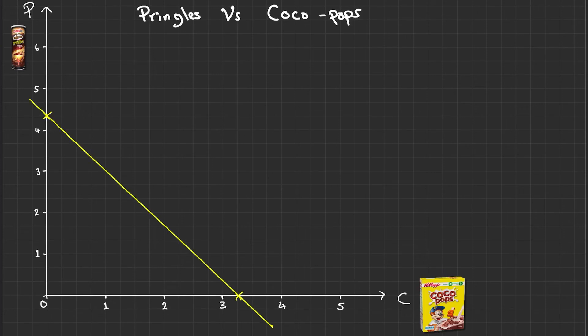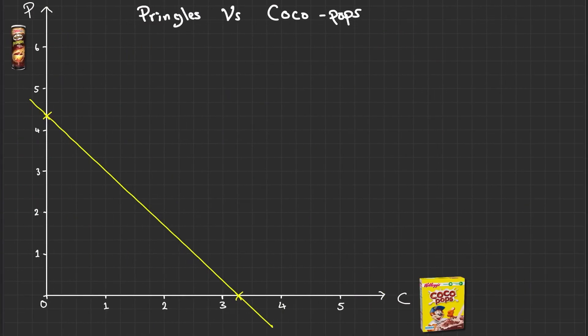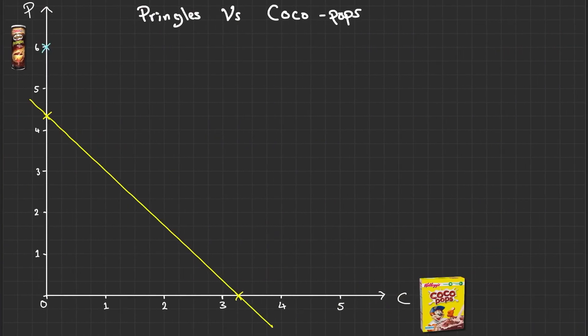And then let's go back to the second equation. So we've got 0 comma 6. So let's plot that here. 0 comma 6. And then we have 3 comma 0. So 3 comma 0. And then we can draw this line in.